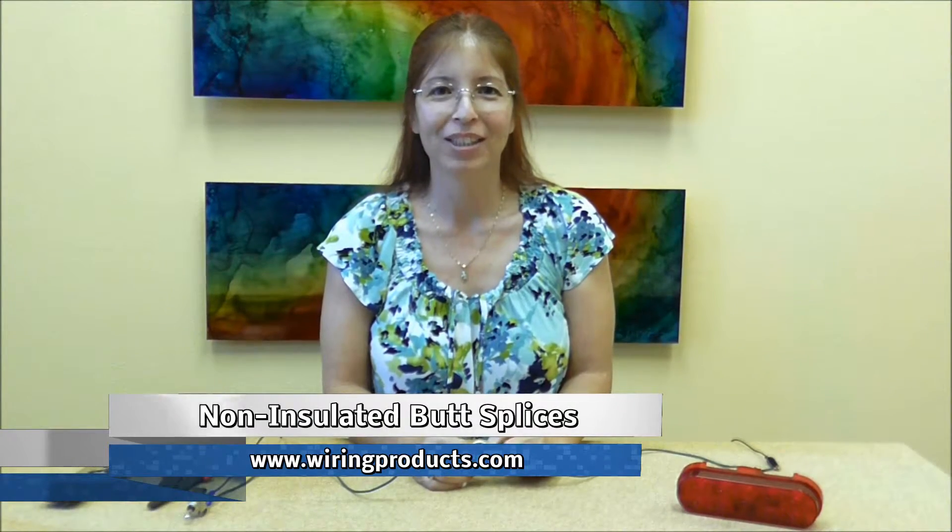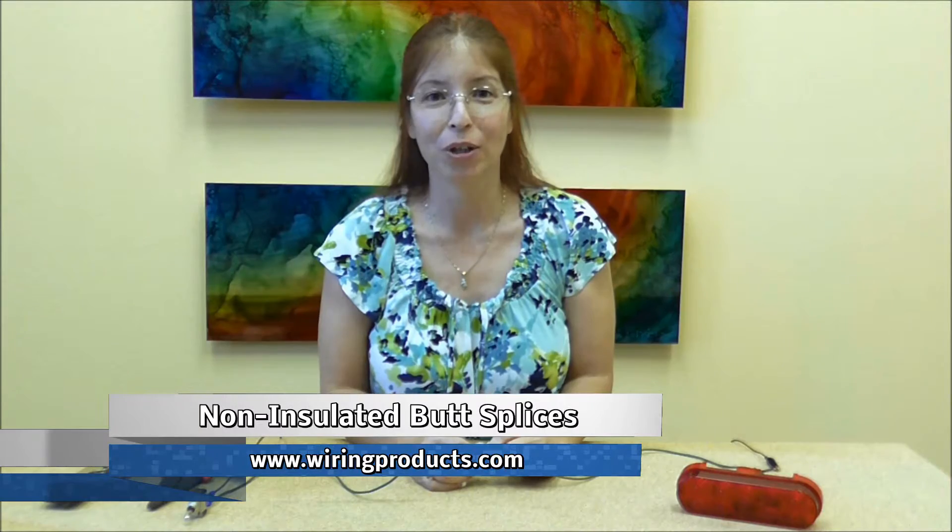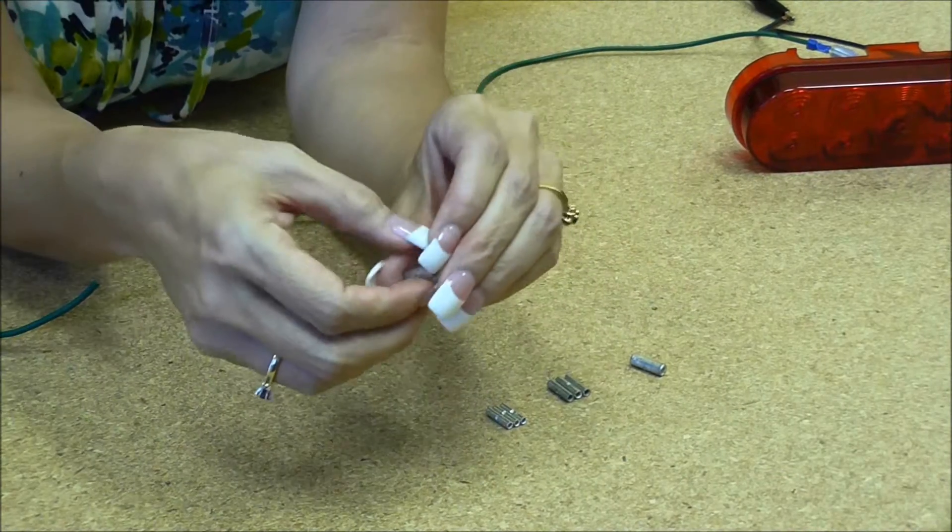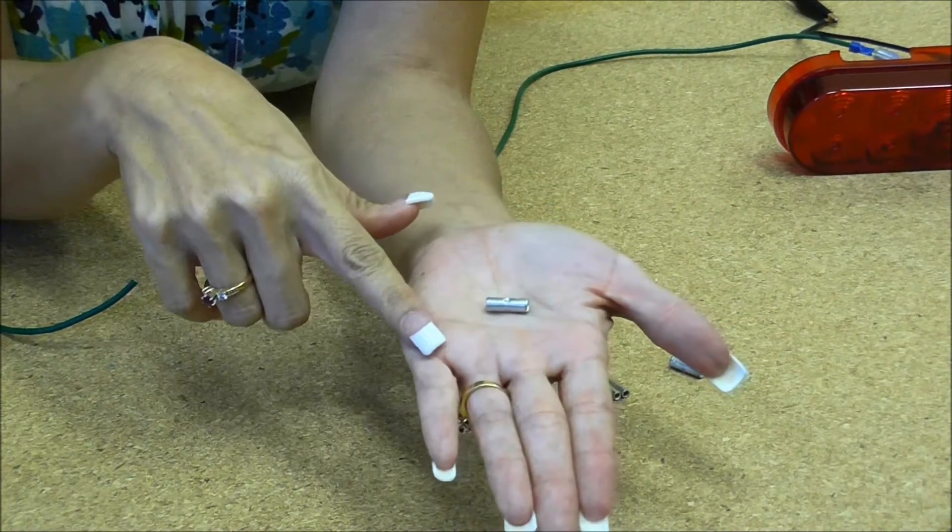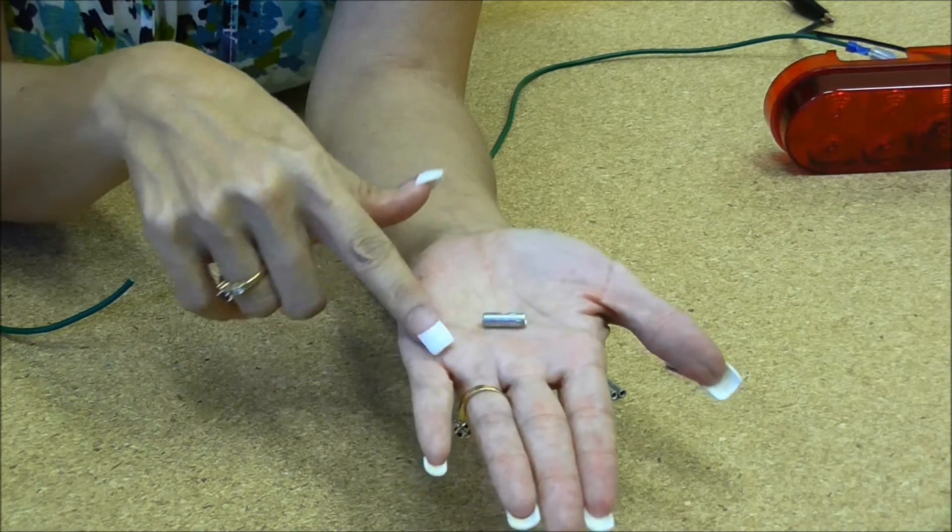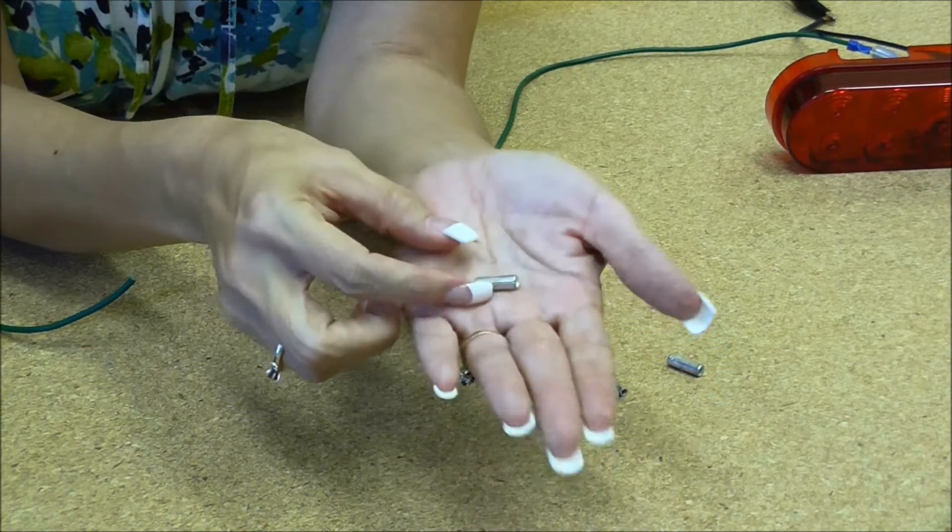Welcome back to Wiring Products. On this episode we are going to work with non-insulated butt splices. These are tin plated copper.